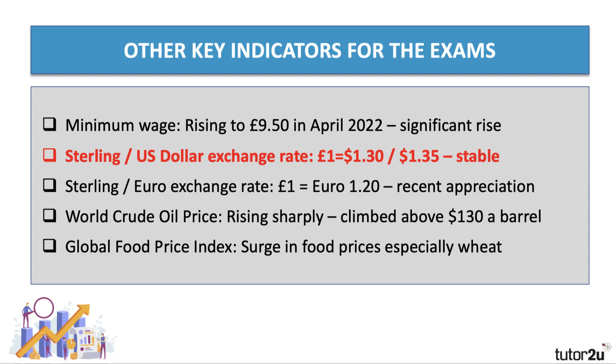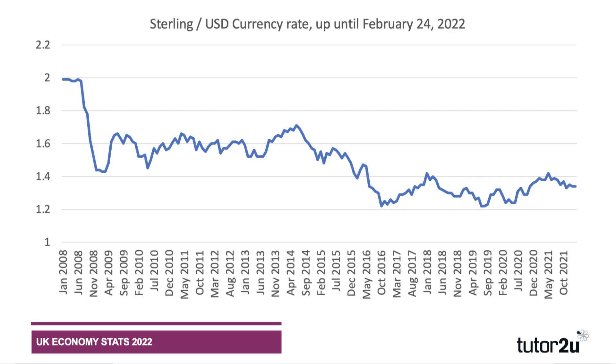The second indicators are the exchange rates. It's always good to know what's been happening to the exchange rate. The sterling dollar is trading at about $1.30, $1.35. It's relatively stable.